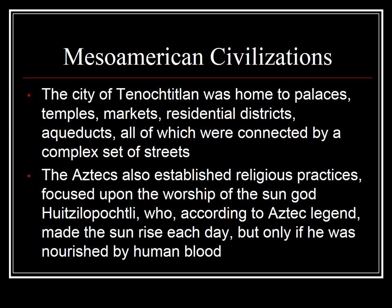The city of Tenochtitlan was home to palaces, temples, markets, residential districts, and aqueducts — all connected by a complex set of streets laid out in a grid pattern, much like contemporary cities today. The Aztecs also established religious practices focused on the worship of the sun god Huitzilopochtli, who, according to Aztec legend, made the sun rise each day but only if nourished by human blood. This is why the Aztecs engaged in massive amounts of human sacrifice — they believed the world would end if they did not sacrifice hundreds of people to their gods every day.